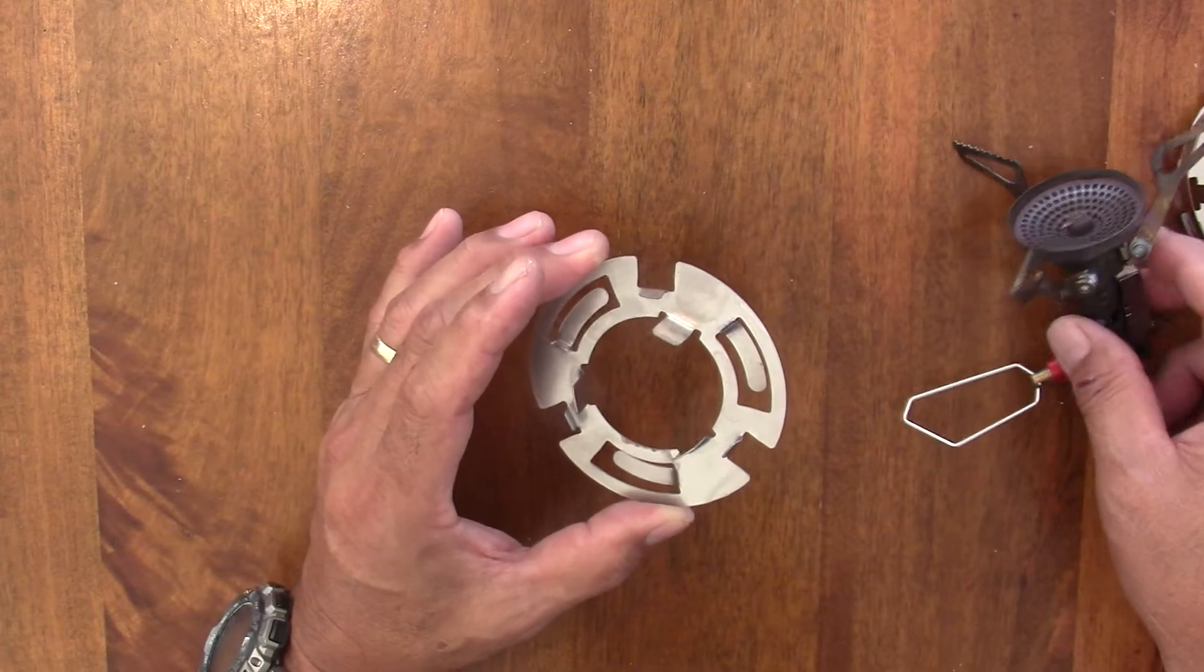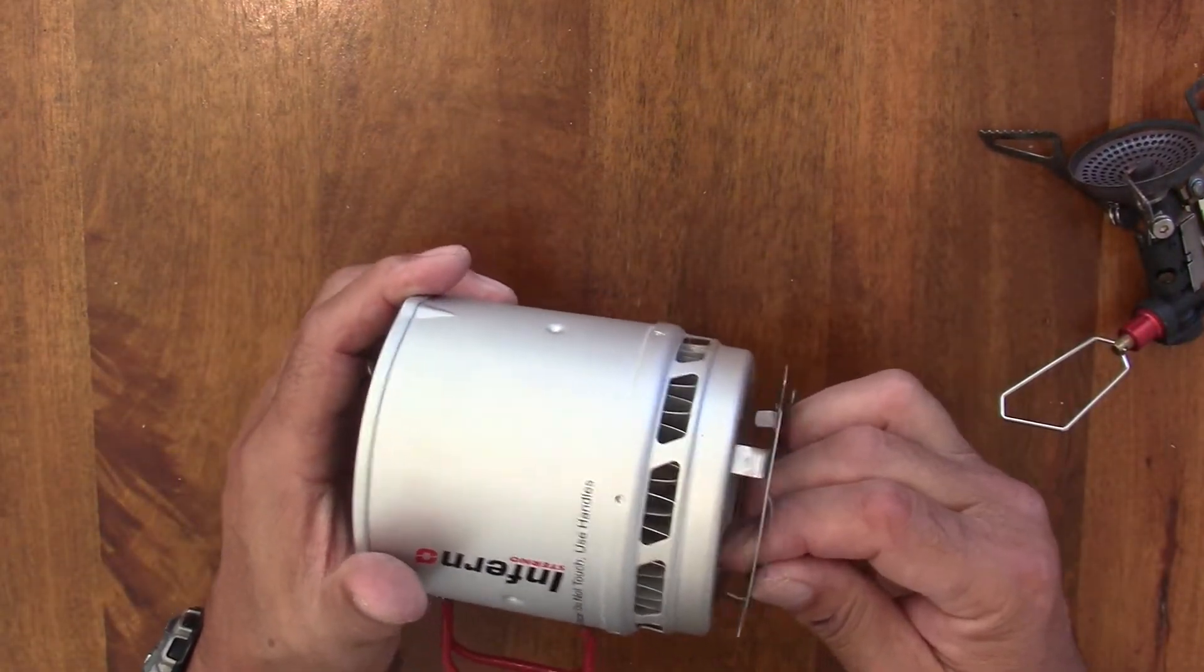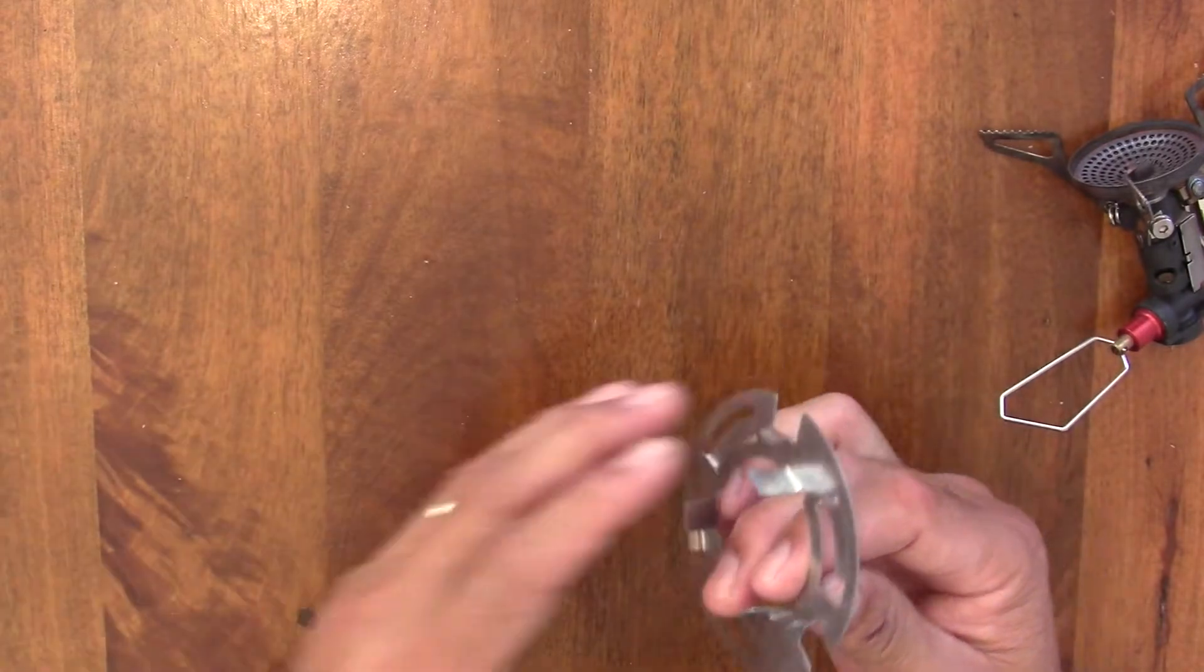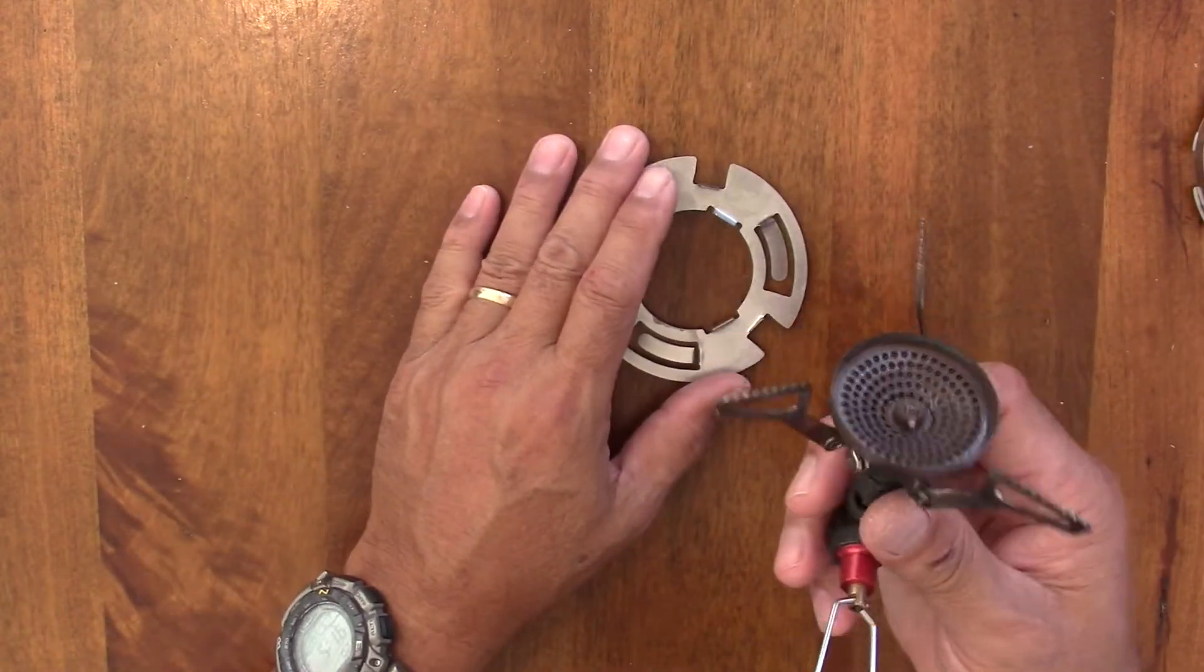Now this is designed for the Soto Windmaster. It's designed to perfectly optimize the distance between the burner head and the plate, and you take your Pocket Rocket Deluxe,